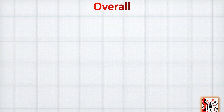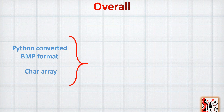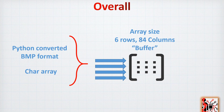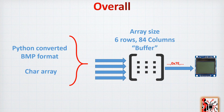Before jumping to the code, let's have an overview of how the program works. First you have the data in a Python-converted BMP format, stored as a char array. This data is uploaded into a buffer — a 6-row by 84-column array inside the STM32F1. After merging all the data we need, we upload it to the Nokia LCD screen. So it's quite simple: prepare the data, upload to the buffer to form the full picture, then send it to the screen.